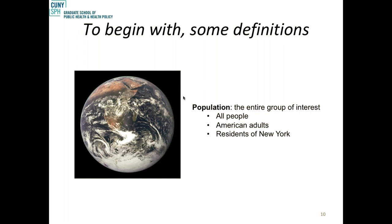So we have a population and we have a sample. When we talk about statistics involving populations, we use Greek letters. If I talk about the average age of Americans from the census — the entire population — I would use the Greek letter mu. If I take a sample of 100 people and describe their average age, I would use x-bar — an x with a bar over the top — to indicate that's a statistic, not a population mean. We call a population mean a parameter.